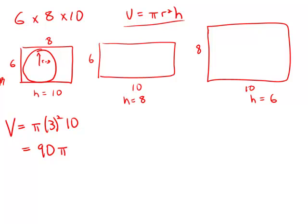If we use the 6 by 10 face as the bottom, this is not going to be an improvement because we can't make r any bigger than 3, and now we have a smaller height. So we won't even figure this out; this is not going to work.